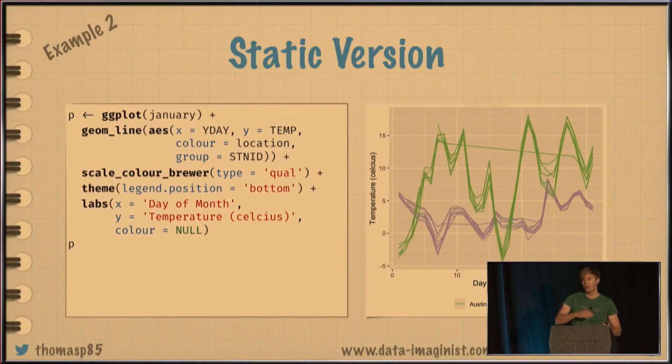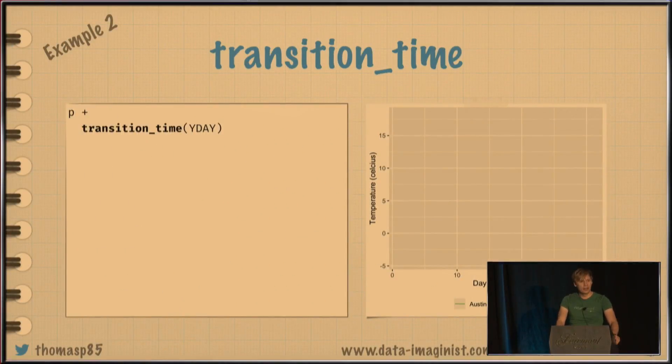So how would I want to animate that? Well, if I wanted to appear for one day at a time, you might think, well, days are continuous as well. So let's try a transition_time again. And you will end up with this animation. And you might think that something is broken. This is an animation. There's just nothing in there. And you would probably be kind of like, what the? But then, when you think about it, transition_time will cut up your data into the different time slots that you have. And you have one measurement per time. And you're trying to draw a line with one measurement, which results in no line. So, of course, nothing gets drawn.